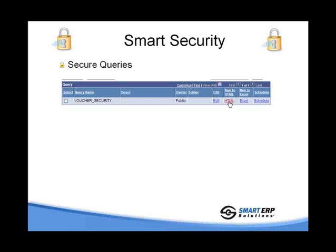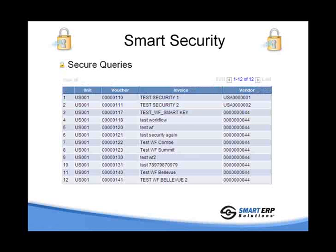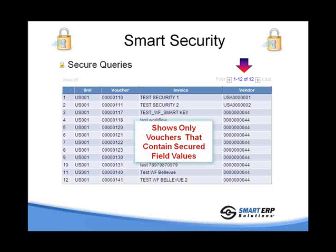In this case, the query voucher security is simply looking at the PS voucher record. When you run the query, you will only see those vouchers that you have security for — in this case, our same 12.